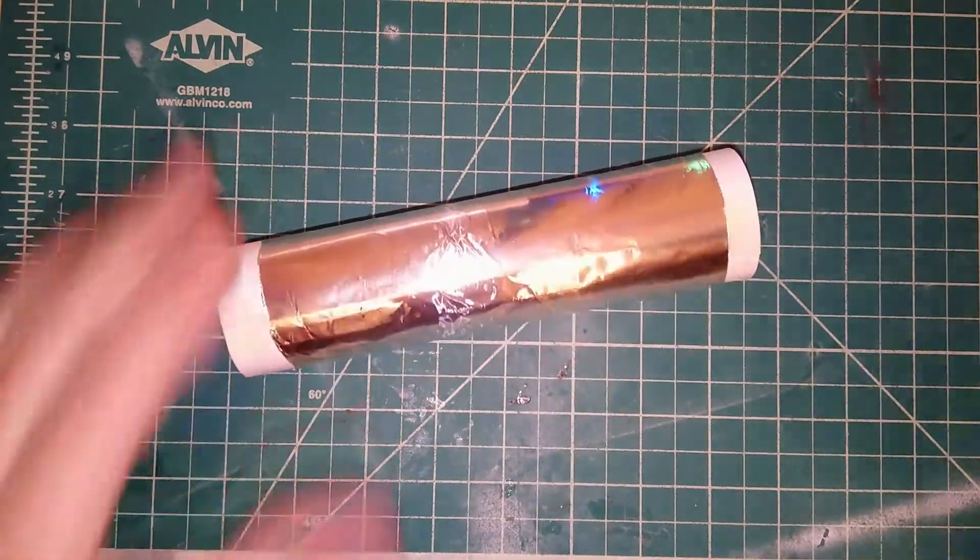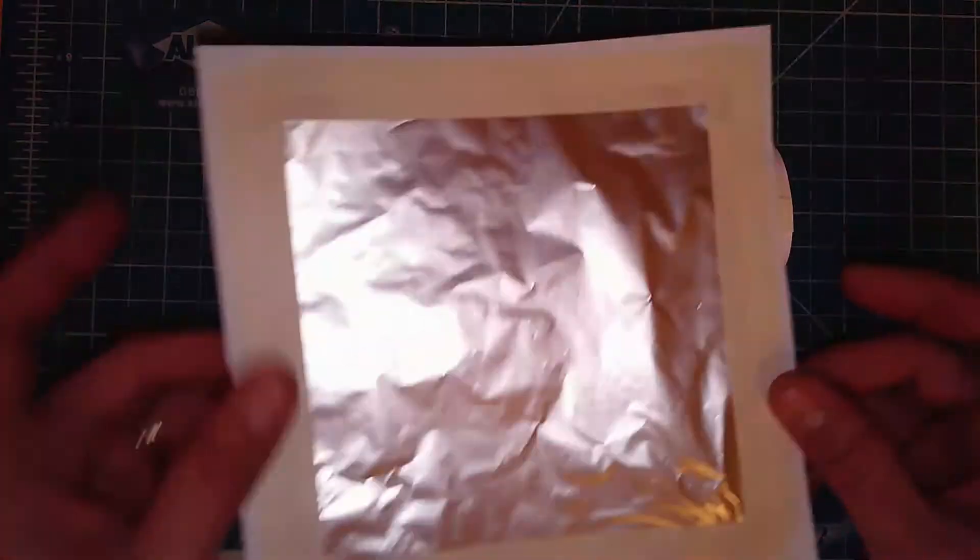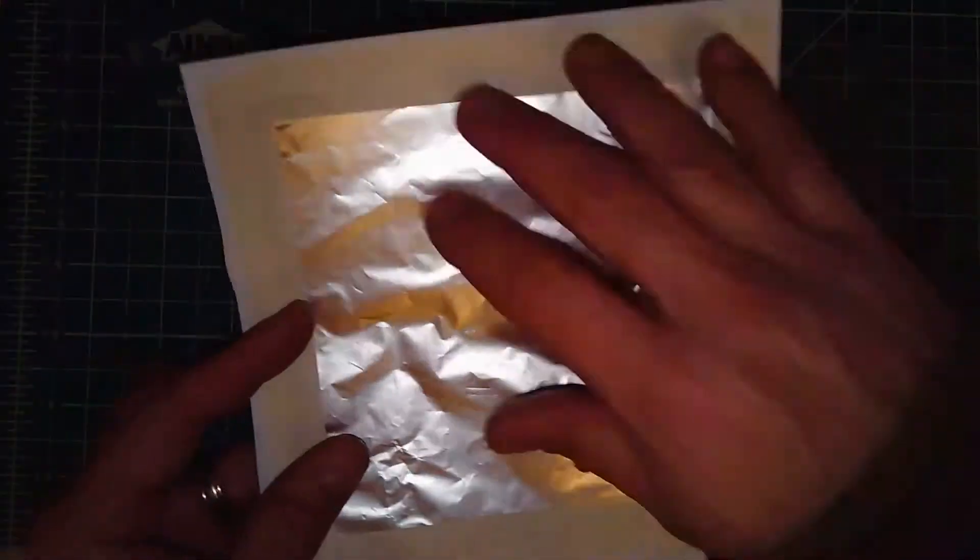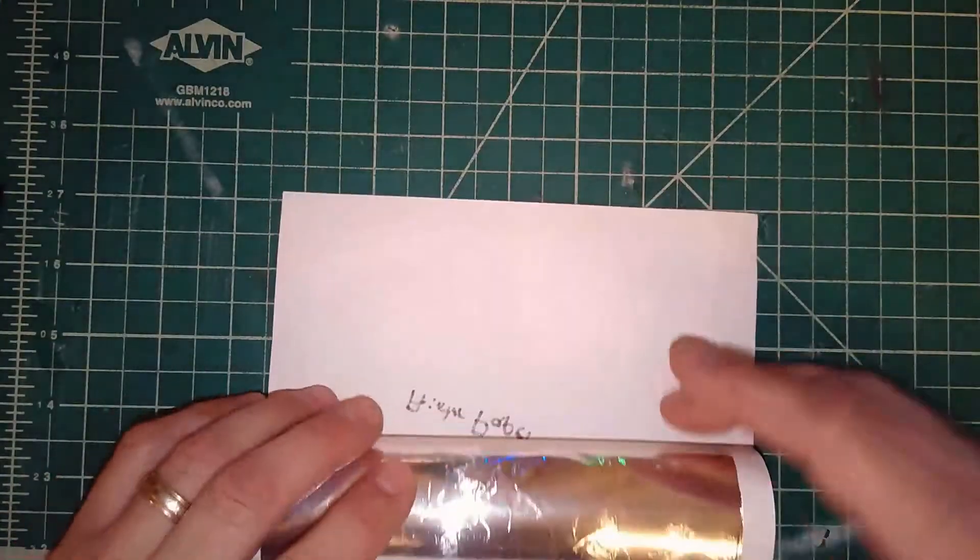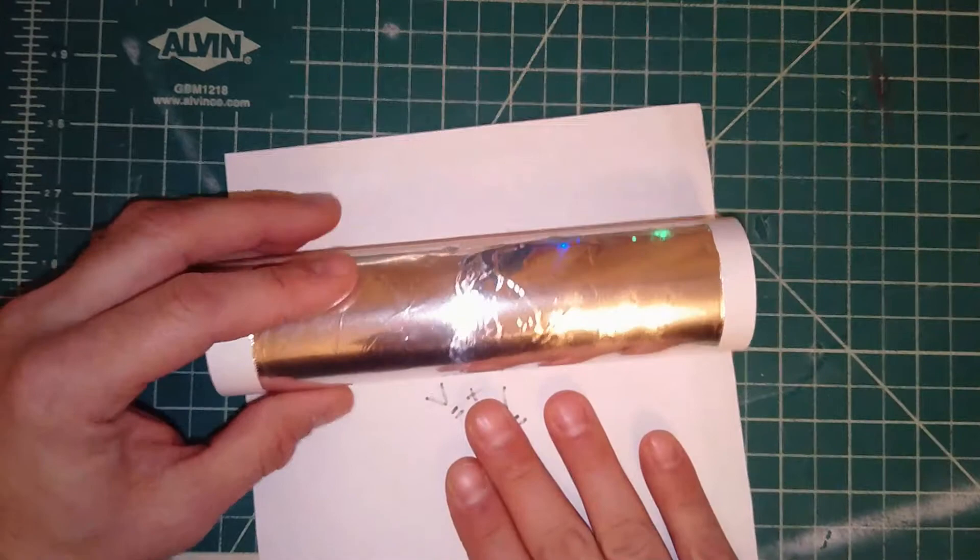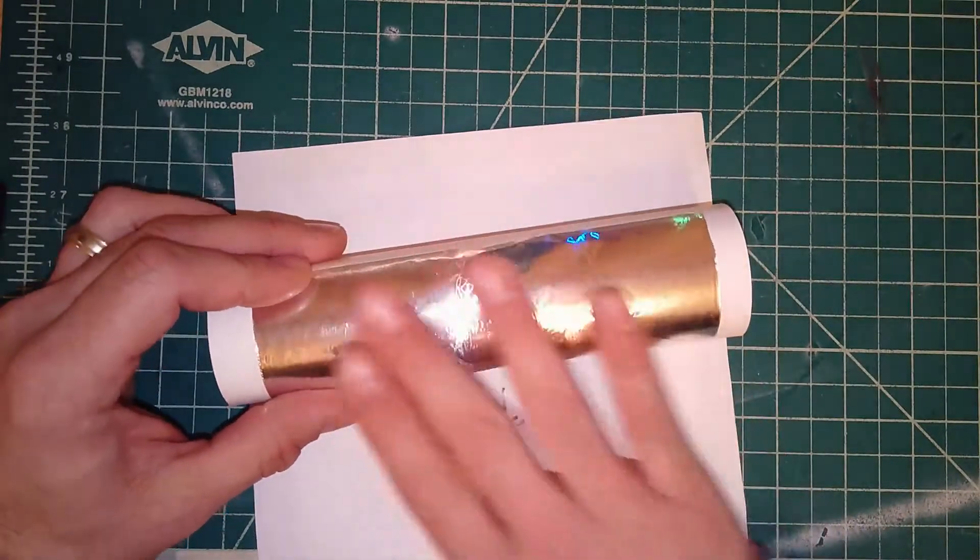Next, we have that piece. We're now going to grab our paper with the tin foil taped onto it and what we're going to do is wrap it around this tube, making sure that it's the paper that's coming in contact with the foil on this one.